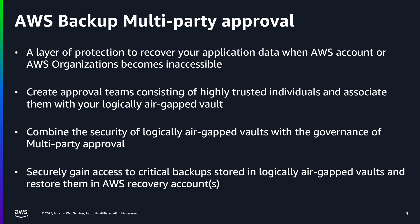Multi-Party Approval for AWS Backup Logically Air Gap Vaults adds a layer of protection for you to recover your application data when your AWS account or AWS Organizations becomes inaccessible due to ransomware or malicious events. Using Multi-Party Approval, you can create approval teams which consist of highly trusted individuals in your organization, then associate them with your Logically Air Gap Vaults. This combines the security of Logically Air Gap Vaults with the governance of Multi-Party Approval to create a recovery mechanism that works even when your AWS account or organization is compromised.